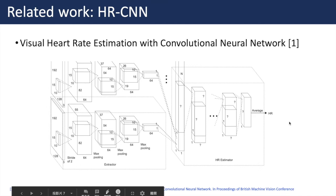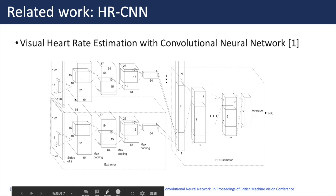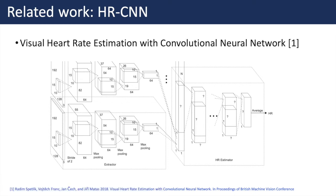The second related work is titled Visual Heart Rate Estimation with Convolutional Neural Network, proposed by Czech Technical University in Prague. They propose a two-step convolutional neural network to estimate heart rate from a sequence of facial images. Unlike the previous related work, this work is trained in an end-to-end manner without preprocessing steps. The network is composed of the extractor and the HR estimator. The extractor takes an image and produces a single scalar, and by running over a temporal image sequence of faces, it outputs a sequence of scalar results, which is then fed into the HR estimator.